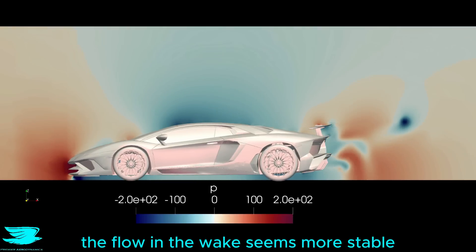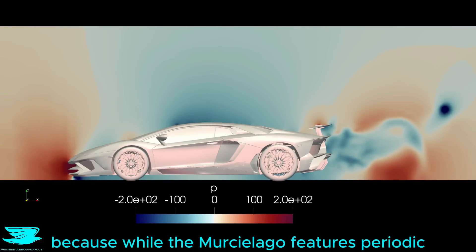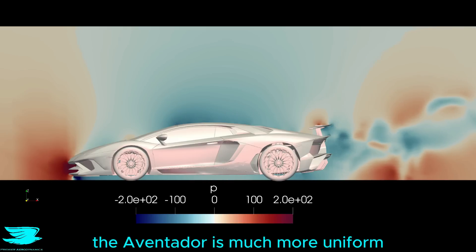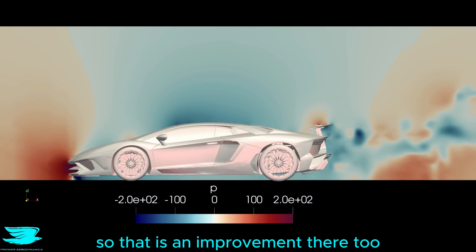The flow in the wake seems more stable because while the Murciélago features periodic low pressure regions, the Aventador is much more uniform, so that is an improvement there too.